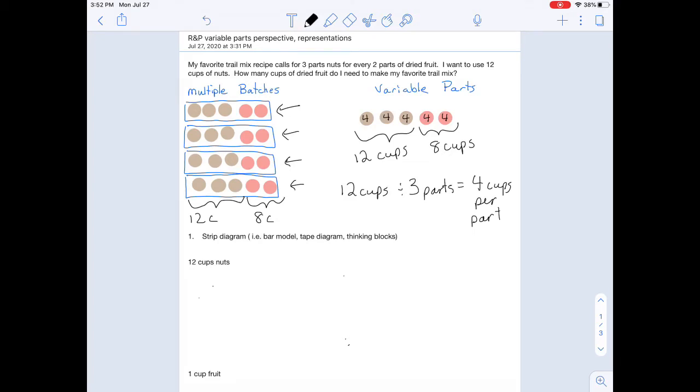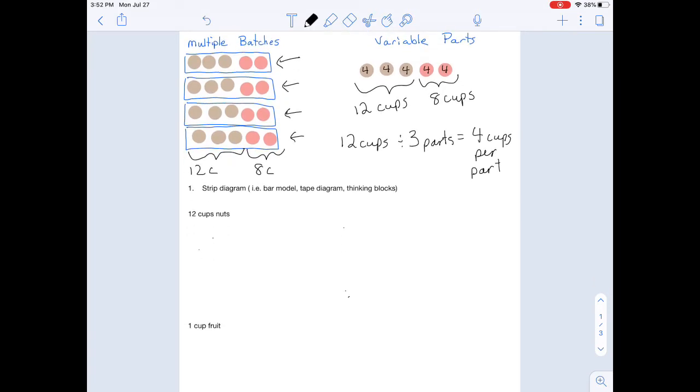We can represent this with a strip diagram. A strip diagram just uses rectangles rather than bubbles and usually separates out each part of the ratio. So for example, I could have my nuts and my fruit, and I would draw my nuts with a rectangle divided into three equal parts, and then I would draw my fruit such that the two equal parts were the same size, or each individual part was the same size.